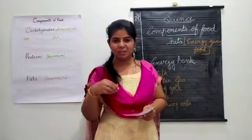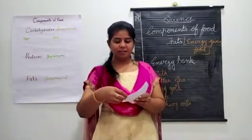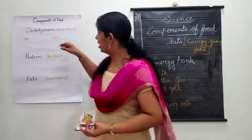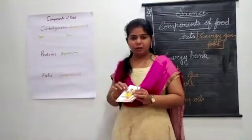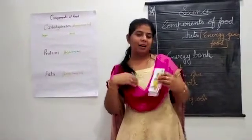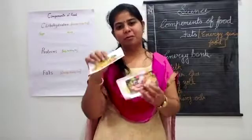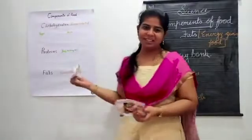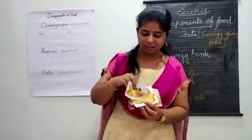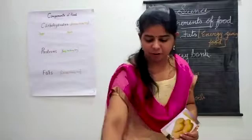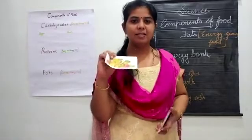Let's do a small activity to see whether you have understood or not. There are some pictures of some food items in my hands and there is a chart here with the different types of nutrients written. What you have to do is sit there and tell me — I will do it here since you cannot come here. You just imagine that you are coming here and doing it. You have to see each food item and identify which type of nutrient it belongs to.